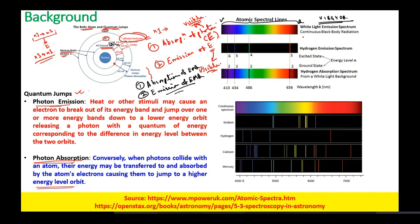Due to this quantum jump, some visible radiations will be emitted. If you capture this emitted light, it will look like lines. This is the hydrogen emission spectrum, when there is a transition of electrons from one level to another.